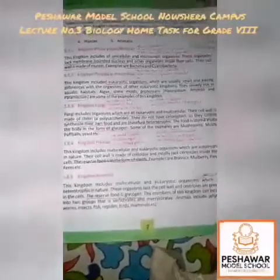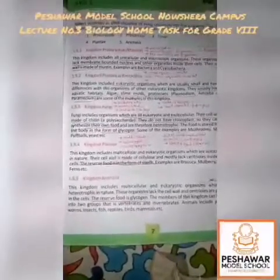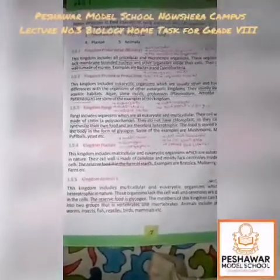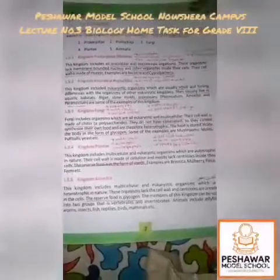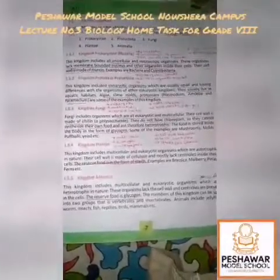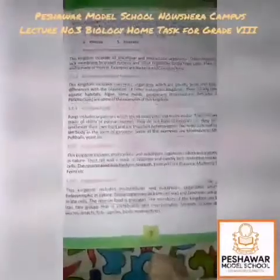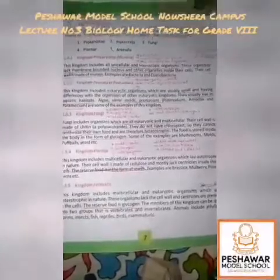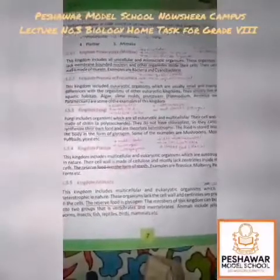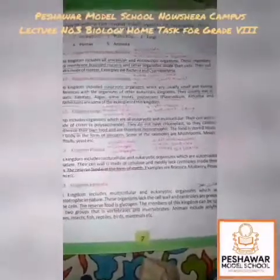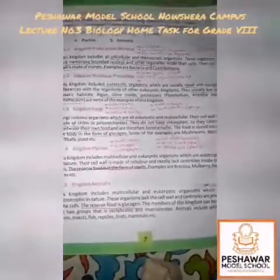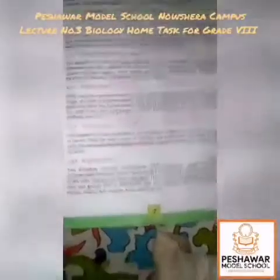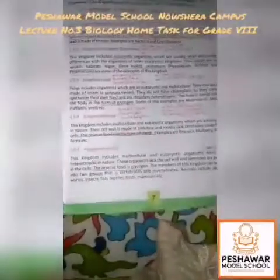Next is Kingdom Plantae. Kingdom Plantae includes all multicellular and eukaryotic organisms which are autotrophic in nature. In simple terms, all plants are included in Kingdom Plantae — they are multicellular, more than one cell, and can make their own food.